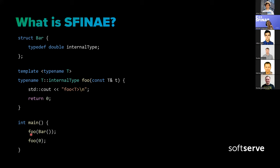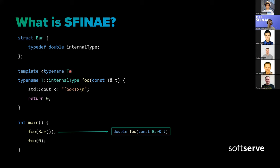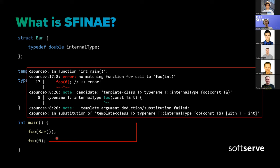In the main function, we're trying to call this template with two types of arguments: first, an instance of the structure bar, and second, an instance of int. The first call is straightforward — after substitution, the compiler tries to substitute T=bar, which gives bar::internal_type, and since bar has internal_type, this is a valid substitution. But what happens with the next call, which is an instance of int? We get an error.